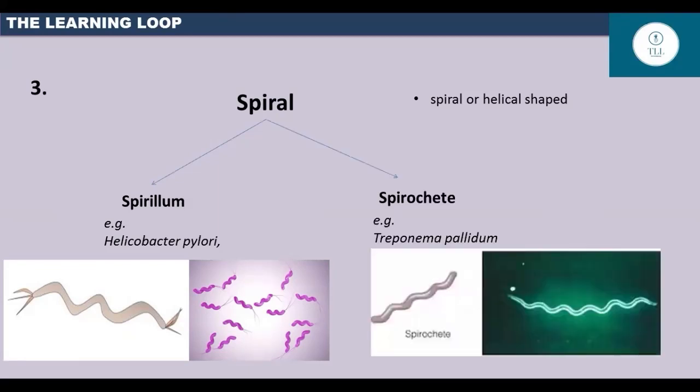The second type is spirochete. It is thin and flexible and does not bear flagella. It causes serious diseases. Example, Treponema pallidum causes syphilis.